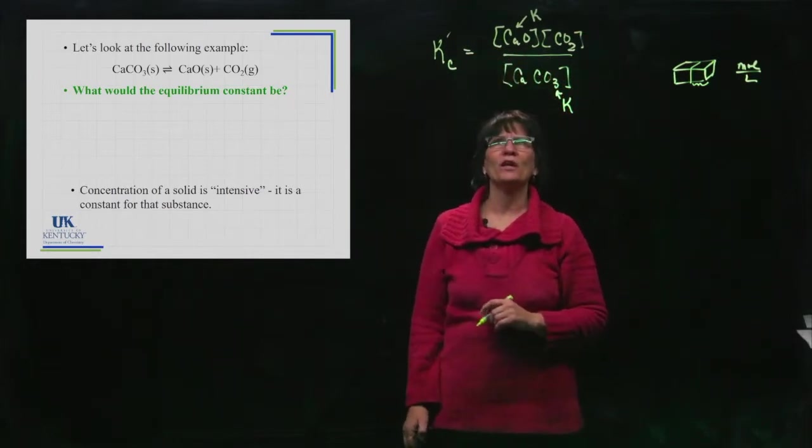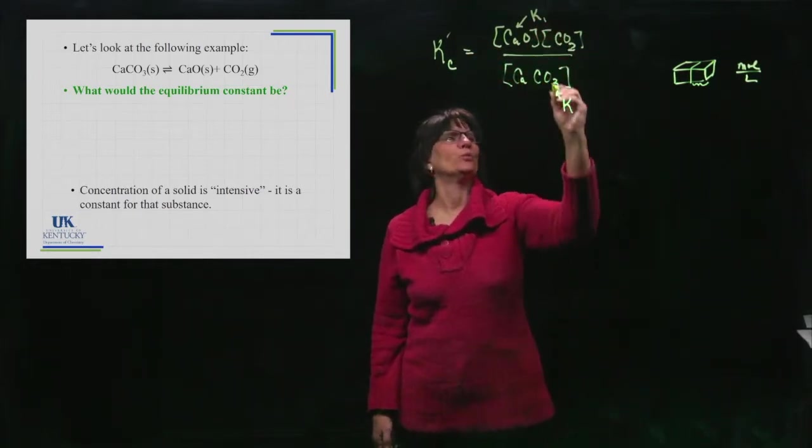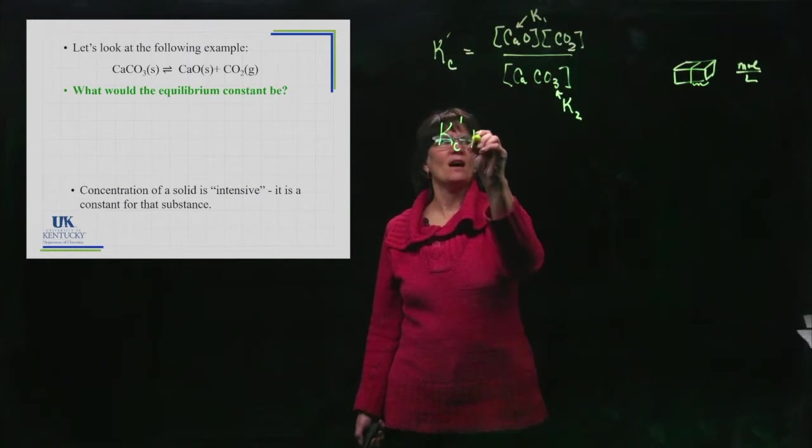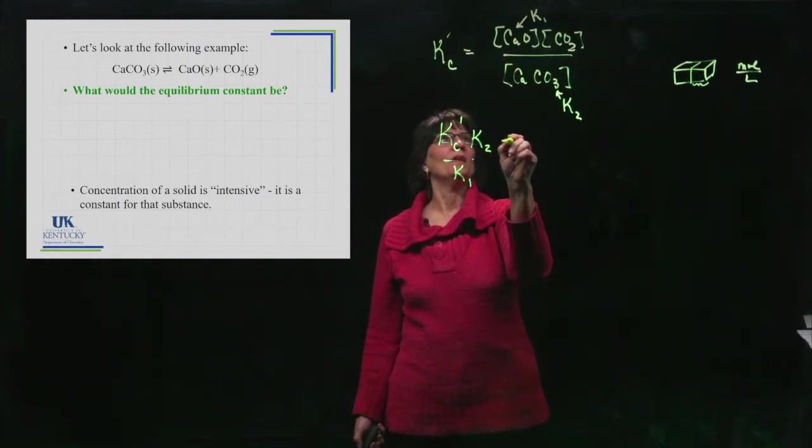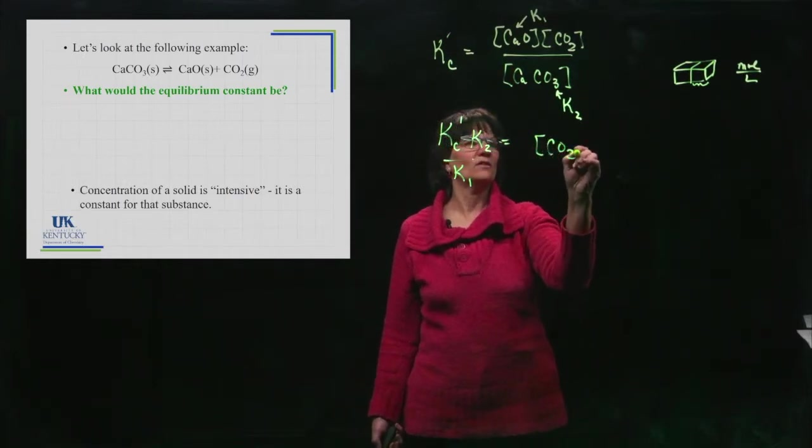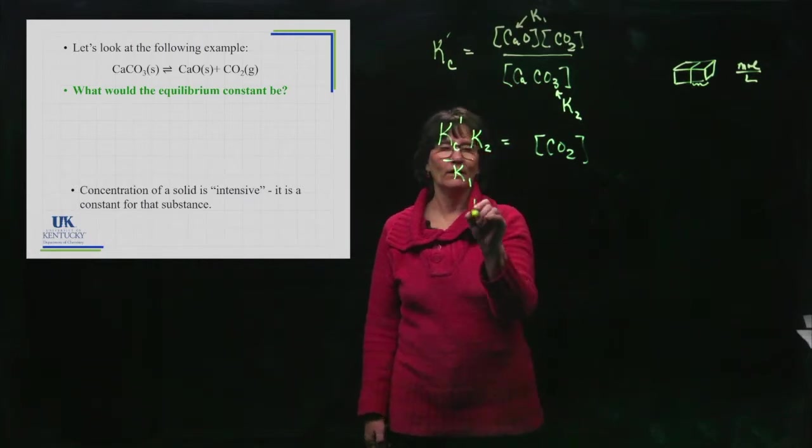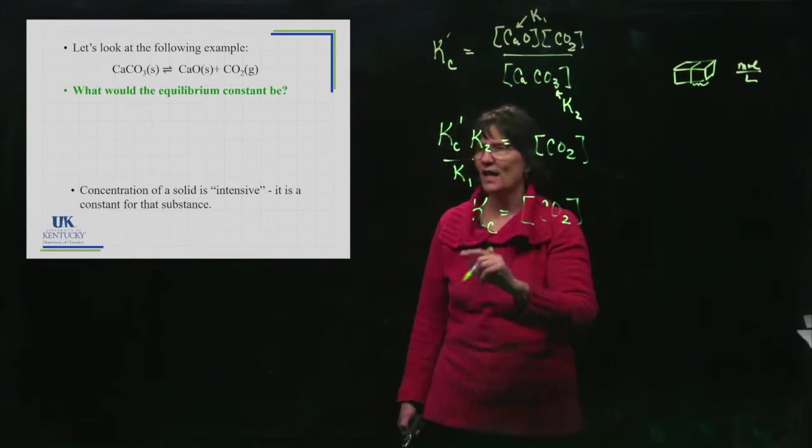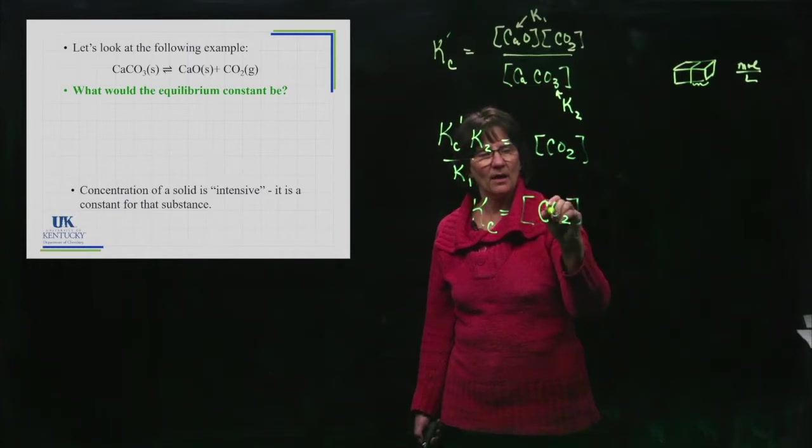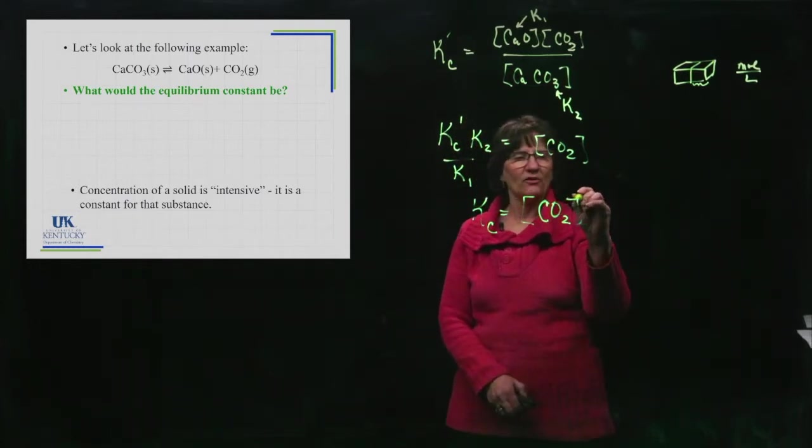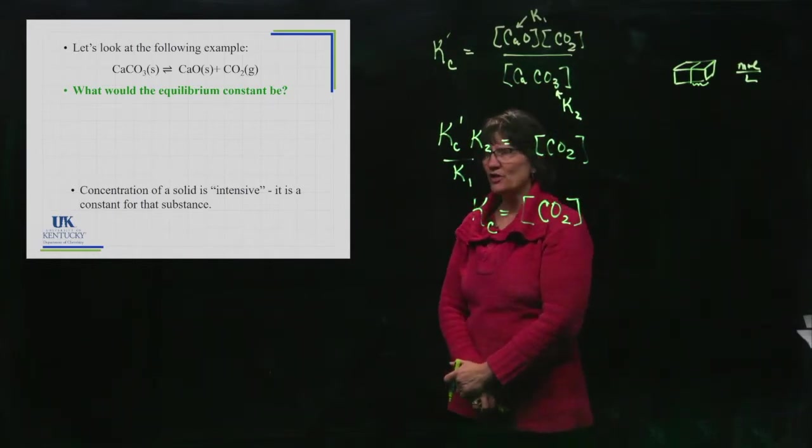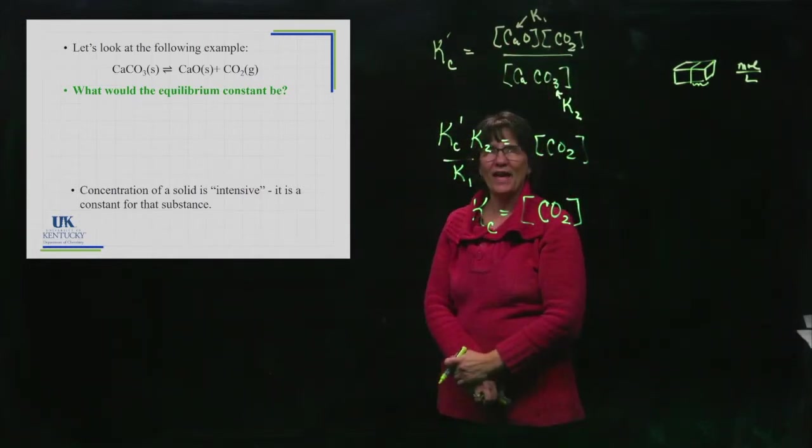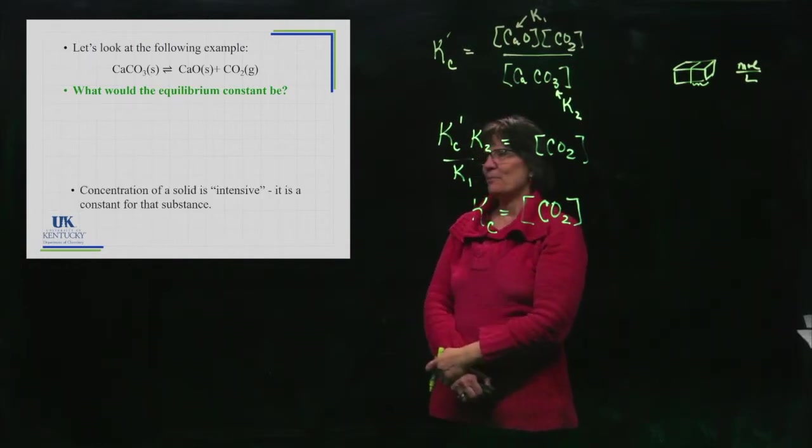So let's take all of my constants and put them over here. Let's call this k1 and this one k2. So Kc prime that I had there, times this constant, divided by that constant, is equal to carbon dioxide's concentration. What does a bunch of constants together look like? Well, a constant. So that's my real Kc. This is the real expression for Kc. It is a concentration of only the gas.